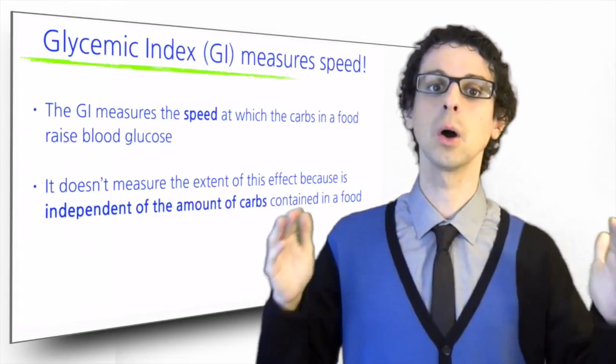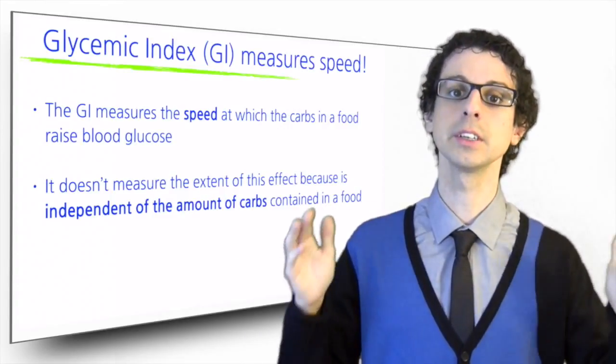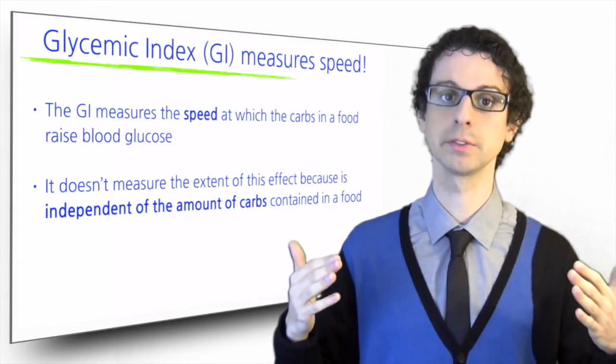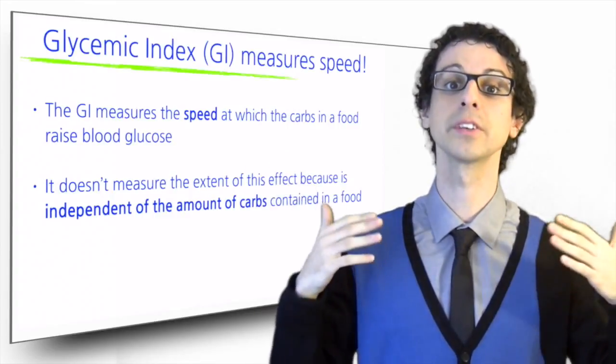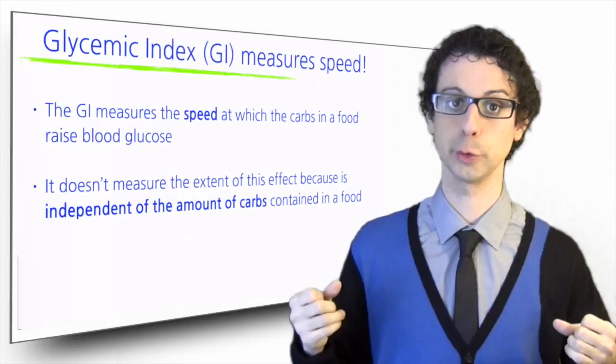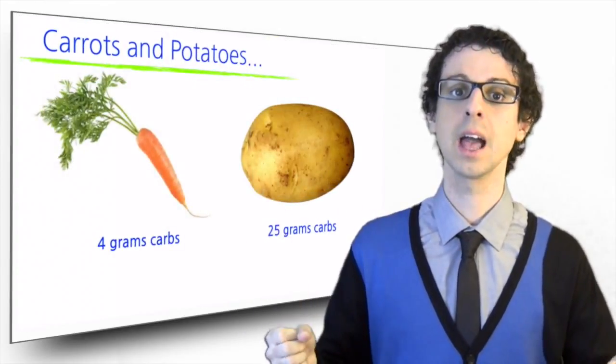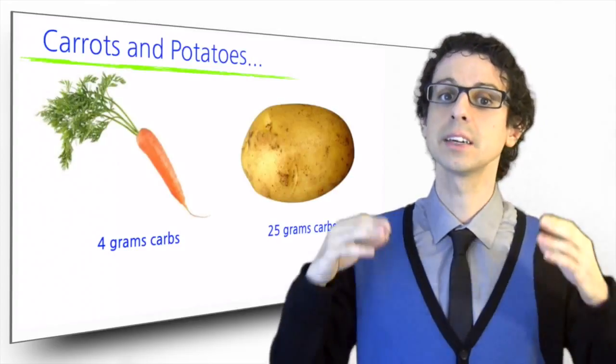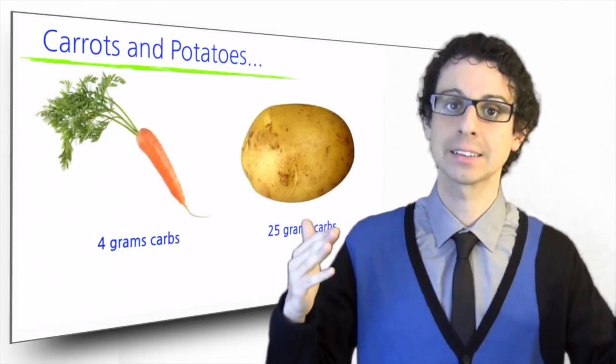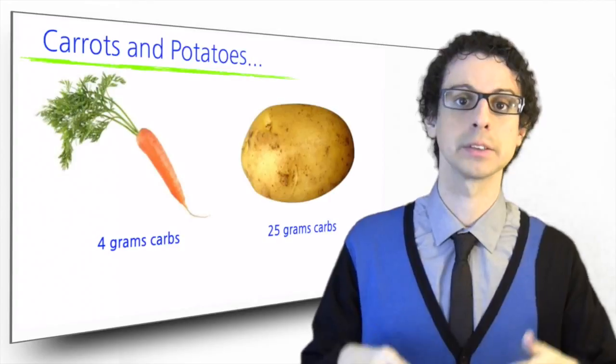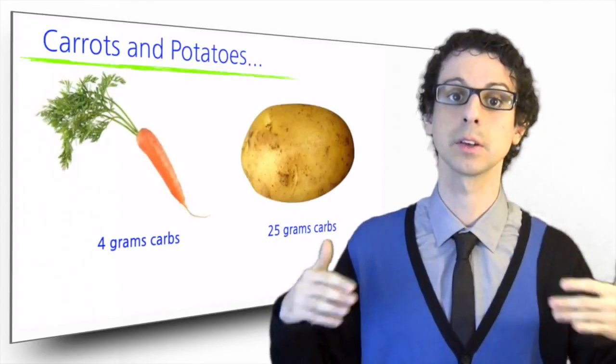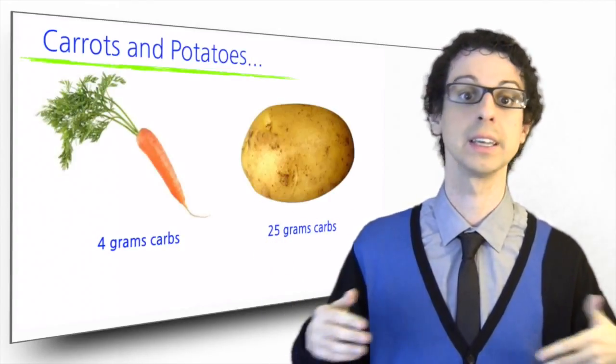So the glycemic index only makes sense if we consider it together with another piece of information, which is the amount of carbs contained in that food. For example, carrots have a relatively high glycemic index, but they also have very little sugar. This means their sugar enters the bloodstream fast, but because it's very small amount, the overall effect of carrots on blood glucose and insulin release is minimal.